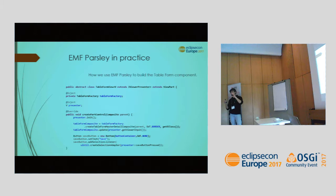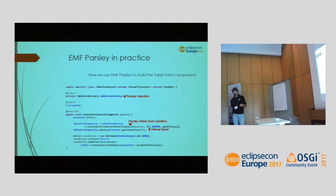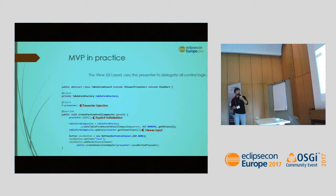The table-form component is a master-detail component: there's a table, you click on an element, and the selected element's details are shown in a form where you can edit it. To use this, you let Parsley inject the factory for this component, call the factory to create the component, and then set the input — just that simple. You can also use injection to have the presenter injected and then initialize it.